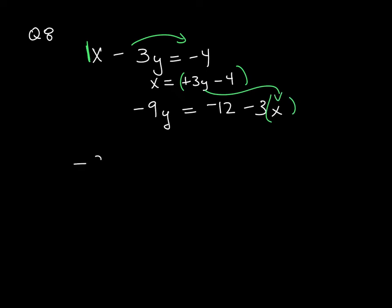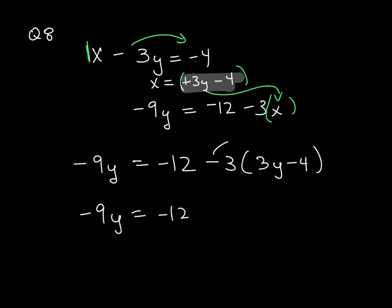So now I have negative 9y is equal to negative 12 minus 3. And again, I'm replacing that with everything on the inside. So that is 3y minus 4. On the left side, I'm going to bring down the 9y is equal to negative 12. Take the negative 3 and multiply it times both pieces there. And that's going to give me negative 9y plus 12. That negative 3 times that negative 4 is a positive.